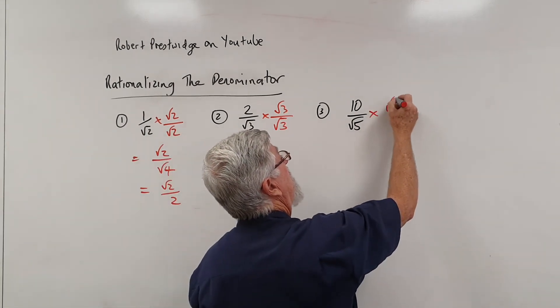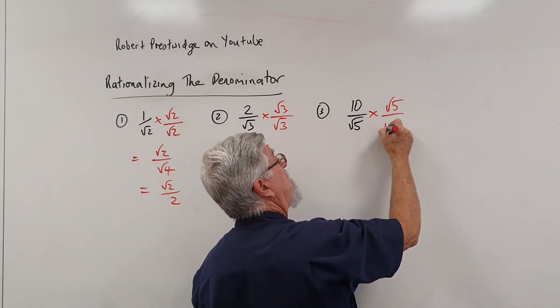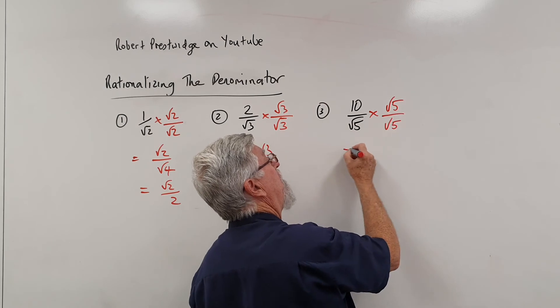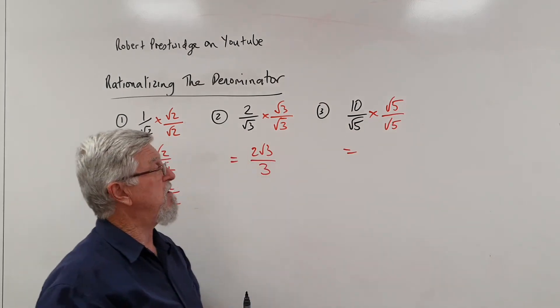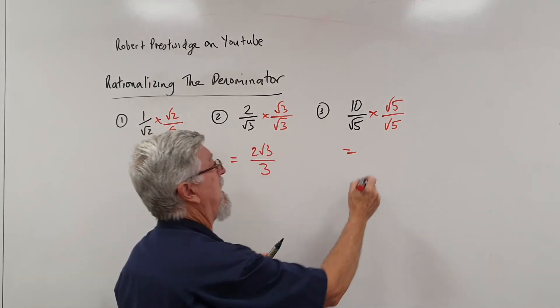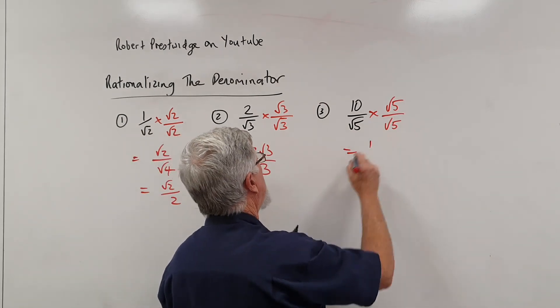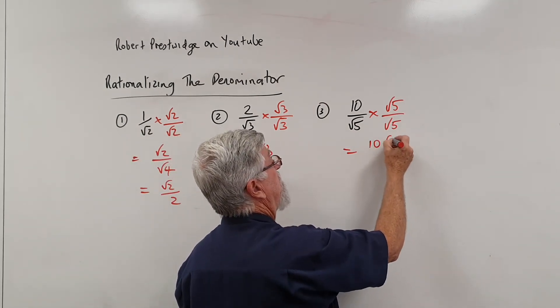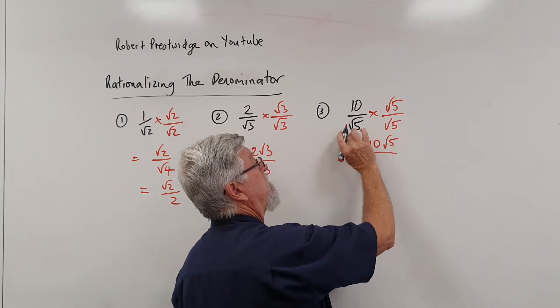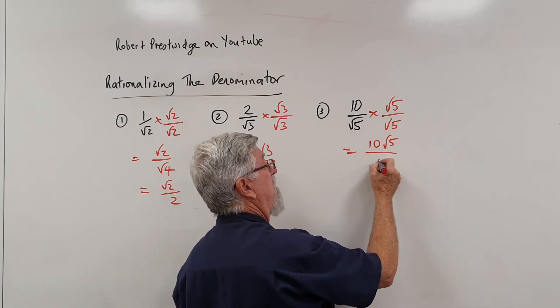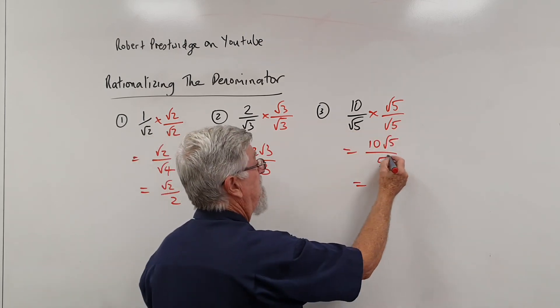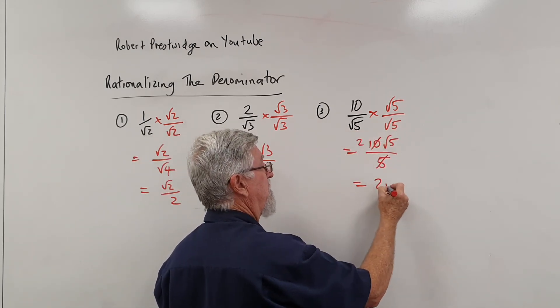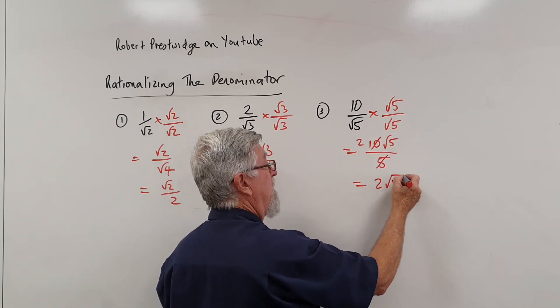10 root 5 — I multiply by root 5 on root 5. This time it's a little bit more complicated, so I end up with 10 square root of 5. And root 5 by root 5 is 5. And 5 into 10 goes twice, and you've got 2 root 5.